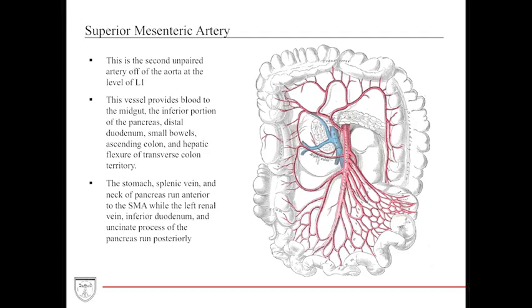The SMA is a very important vessel because it can sometimes become occluded. Just as the coronaries in the heart are occluded, the SMA can become occluded and cause essentially angina for the intestines.